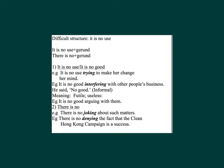Concept: Difficult structure. 'It is no use' — for example, 'It is no use trying to make her change her mind.' Another example: 'It is no good interfering with other people's business.' Note: 'No good' is informal.